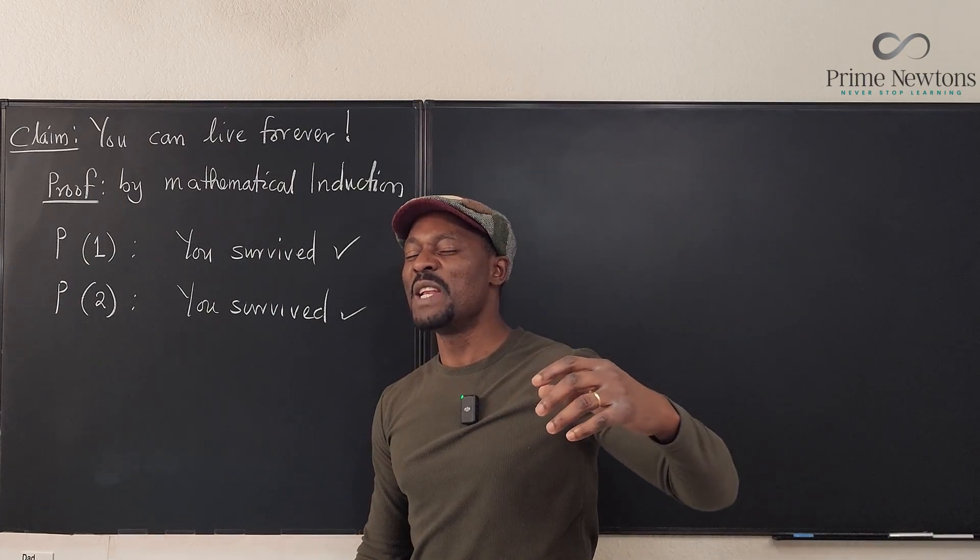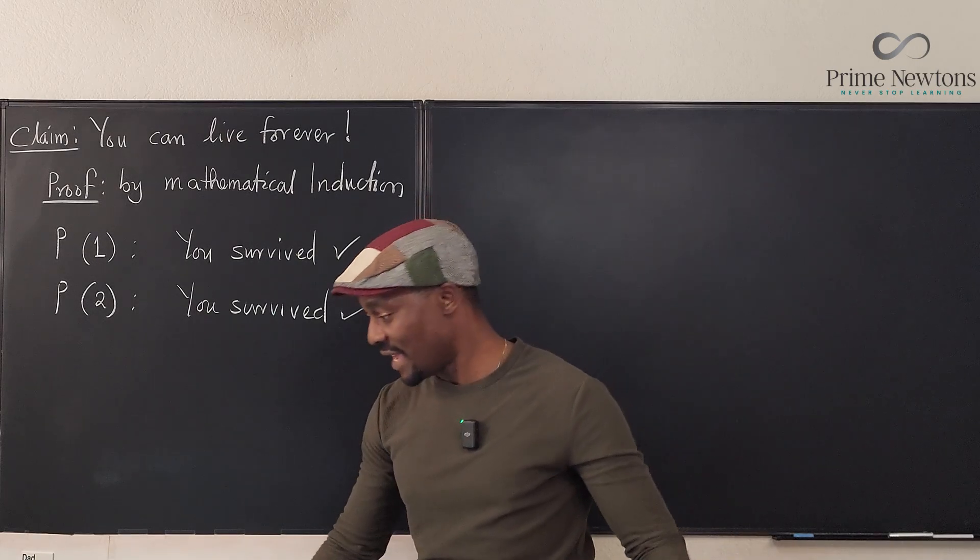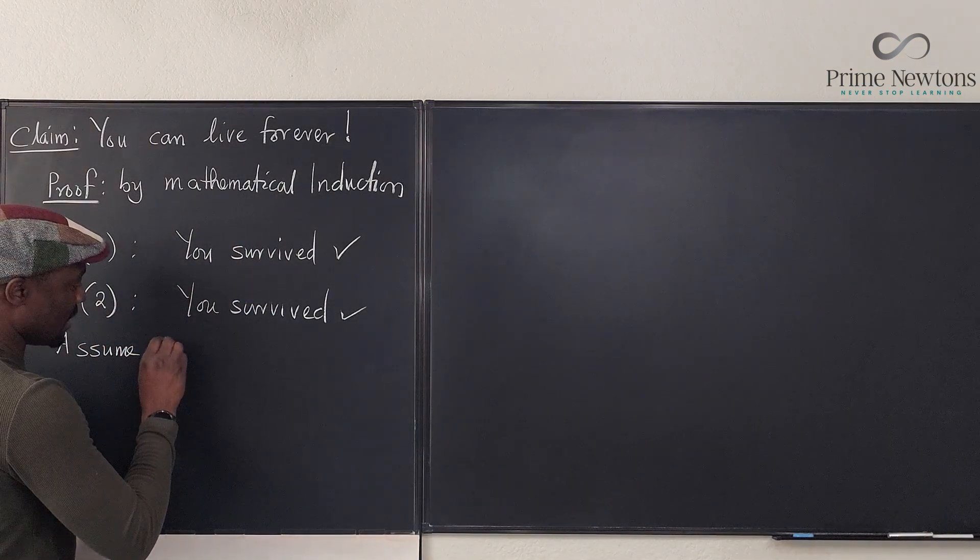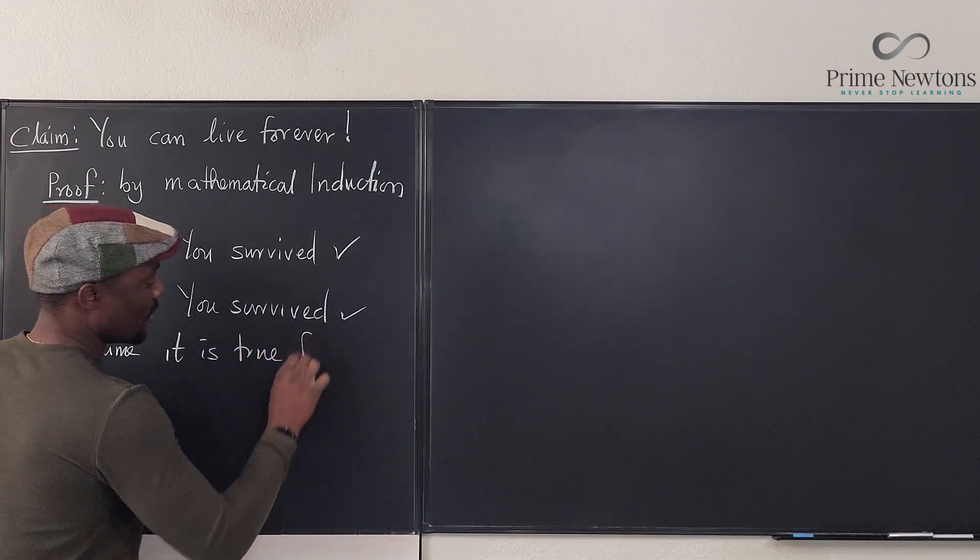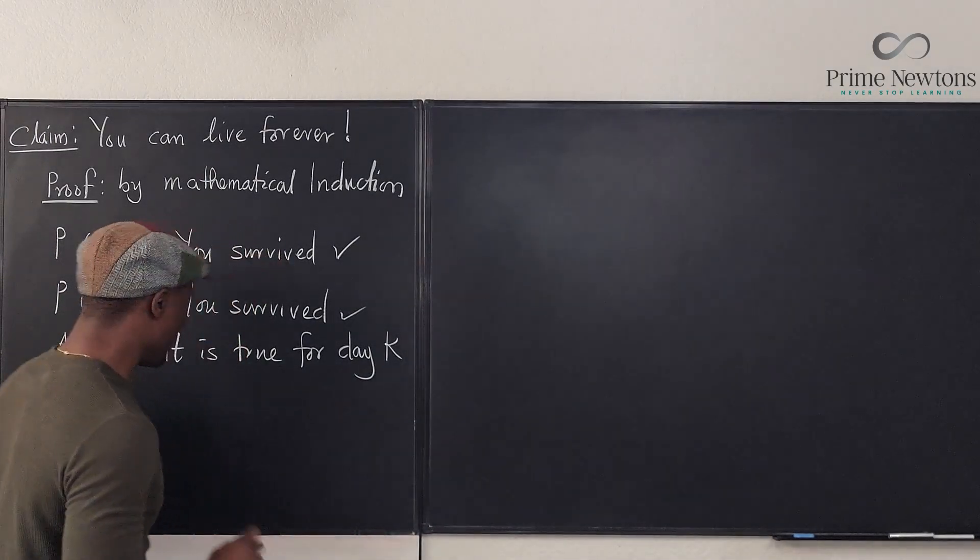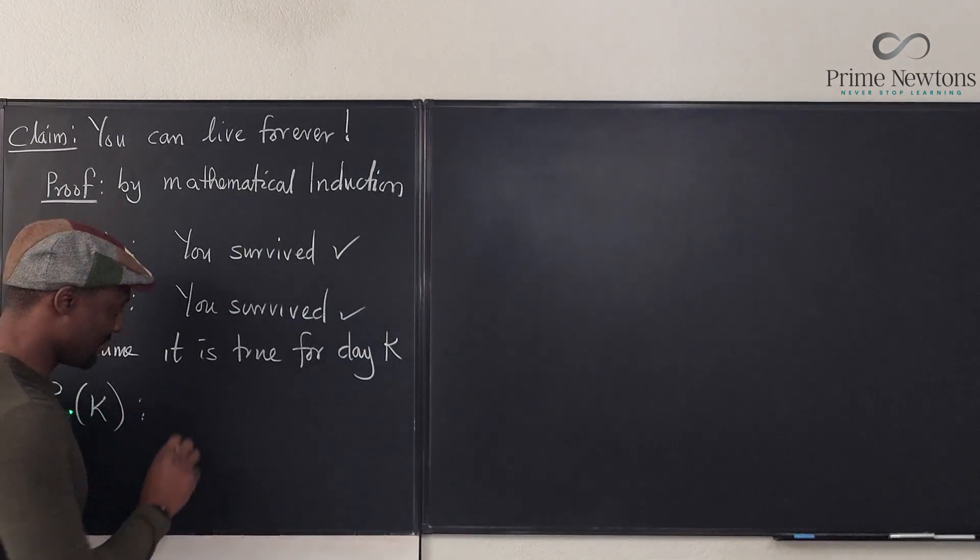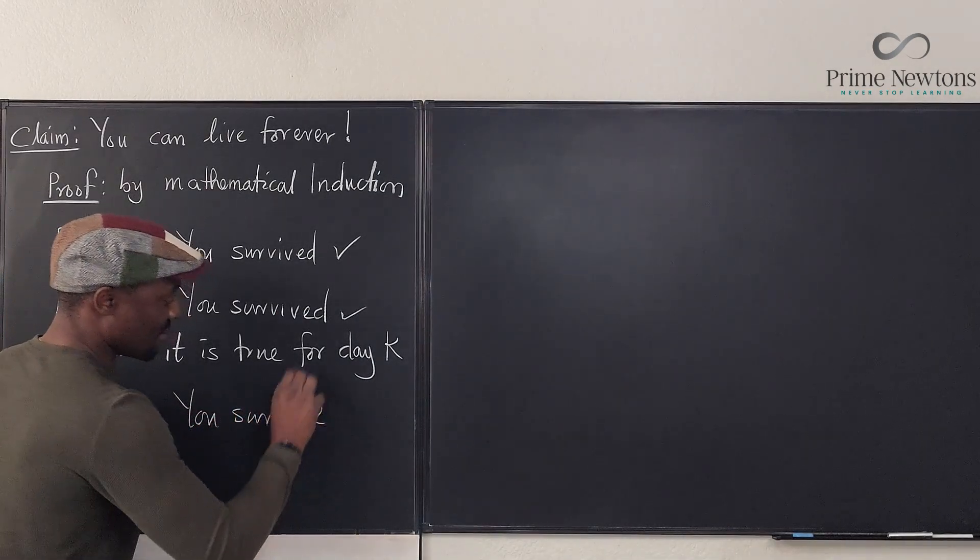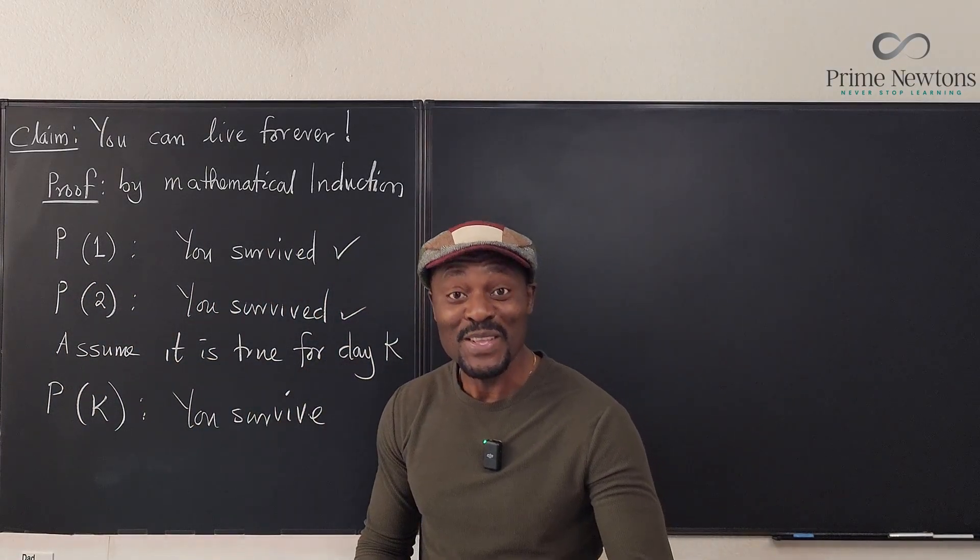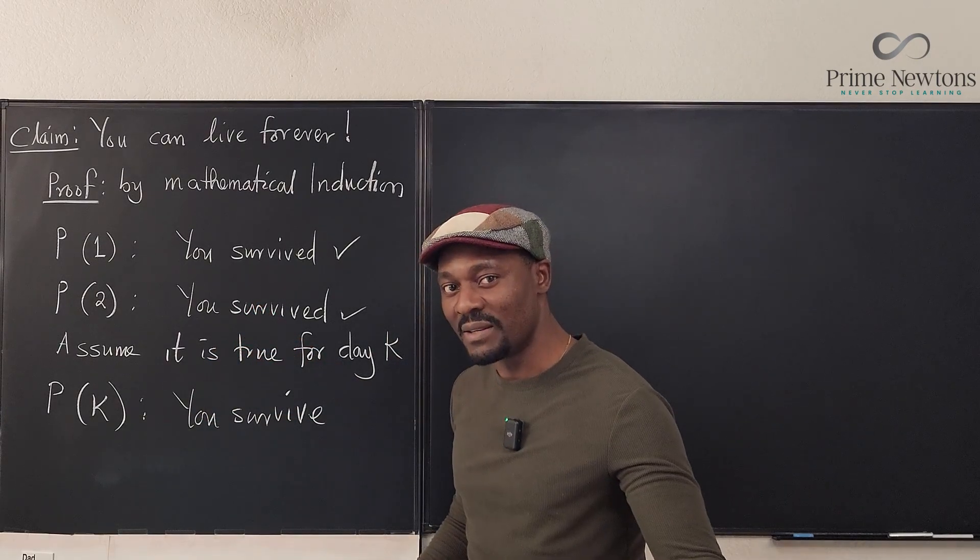So let's assume it is true for any day K where you survive. So you wake up on a day, assume it is true for day K. Now do we know what day K is? We don't know but we're going to assume it is true. So P(K) is such that you survive. We just need to show that you will survive day K plus one.